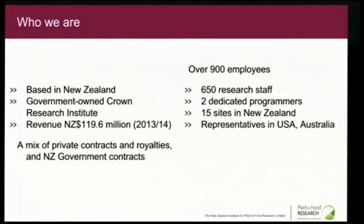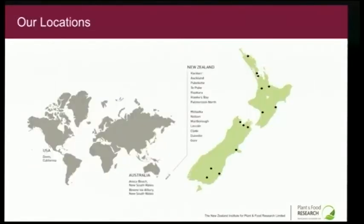We had a revenue of about $120 million last year, which is small compared to the likes of Red Hat and Google, but we're a research institute. We're supposed to earn half our revenue from private work. We have about a thousand-odd people, two-thirds of whom are actual scientists and research people. I'm the only full-time programmer in the IT department. We're based in New Zealand with a couple of sites in Australia and one in Davis, California.